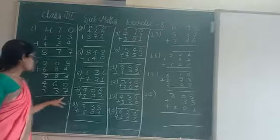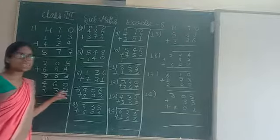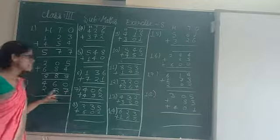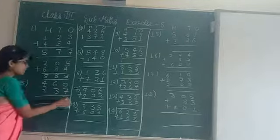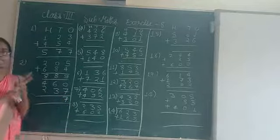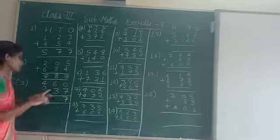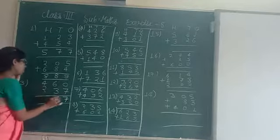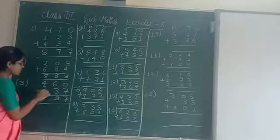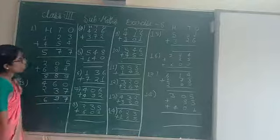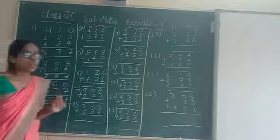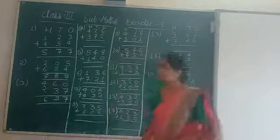Then question number 3: 7 plus 0 is 7. 6 plus 3 — 7, 8, 9. 4 plus 2 — 5 and 6. Okay, this is the solution for question number 3.